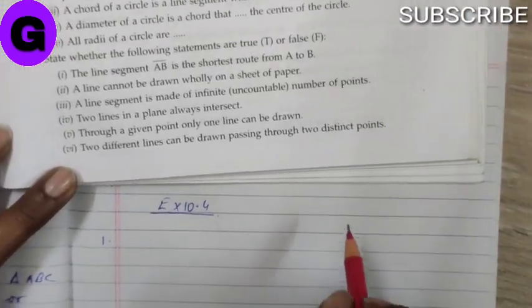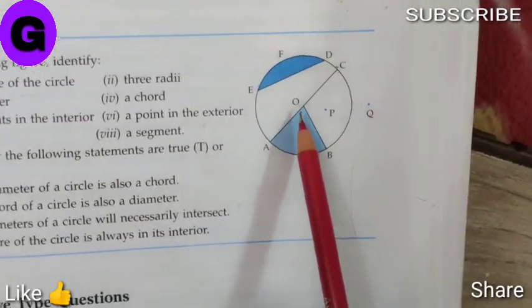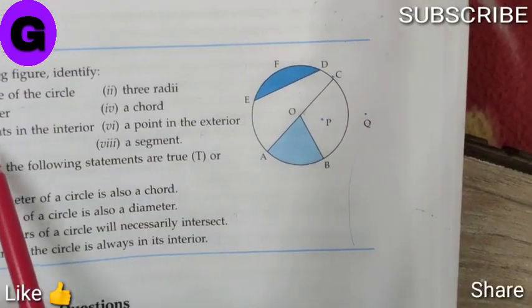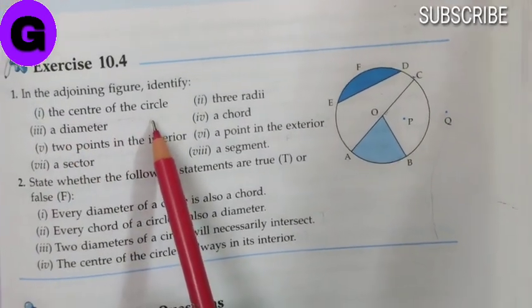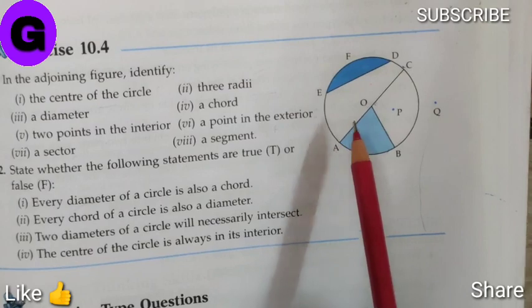A figure has been drawn where it has many points they have marked. The first question they ask is, what is the center of the circle? So, the center of the circle is O.